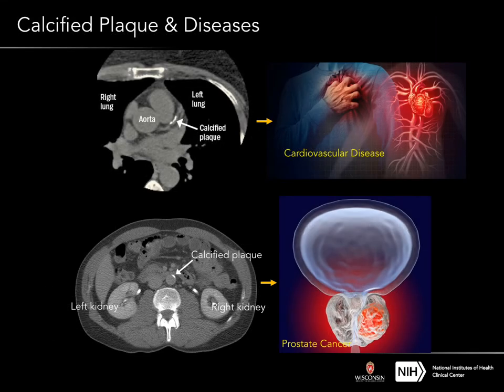The calcified plaque in the blood vasculature is a very strong indicator for many diseases such as cardiovascular disease and prostate cancer. Automatic detection of plaque is very helpful for early diagnosis of these diseases and also for designing personalized treatment.